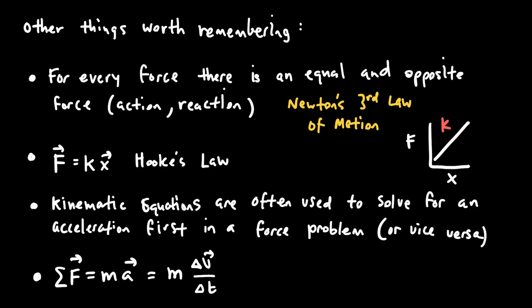Kinematic equations are often used in conjunction with dynamics problems because both include acceleration. Sometimes you use a kinematic equation to find acceleration for use in F = ma; other times you use F = ma to find acceleration for a kinematic equation. Finally, since acceleration equals Δv/Δt, Newton's second law can also be written as F = m * (Δv/Δt). So if you're given velocities and times, you can apply Newton's second law using Δv/Δt instead of treating acceleration as a separate quantity.